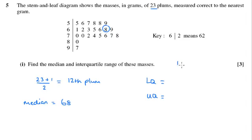So to find the middle of the lower half of the data, again if we add one on and halve it, that will tell me now that I'm looking for the sixth plum from the beginning. 1, 2, 3, 4, 5, 6. So the lower quartile is 59.